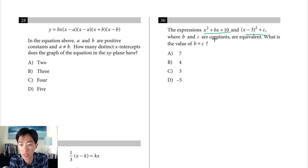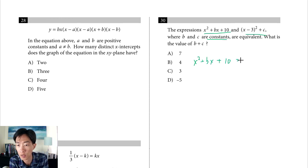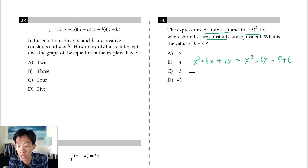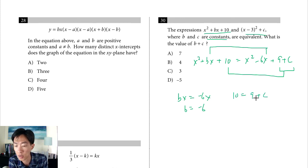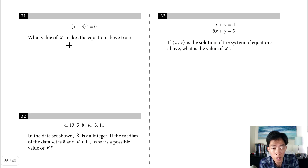Question 30: (x plus 3)² plus c equals x² plus bx plus 10. Expanding: x² minus 6x plus 9 plus c. Matching coefficients: bx equals negative 6x so b equals negative 6; and 9 plus c equals 10 so c equals 1. Therefore b plus c equals negative 6 plus 1 equals negative 5.